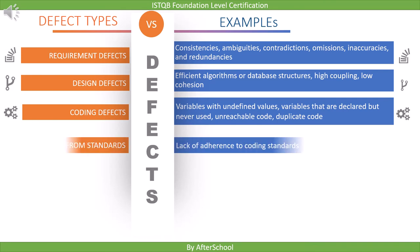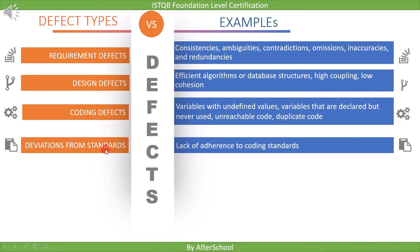The next defect type is deviations from standards — for example, lack of adherence to coding standards. In static testing we can easily find these defects. For example, for C coding we have the MISRA guideline, so we check code with respect to the MISRA guideline. If we find any deviation, we report it.